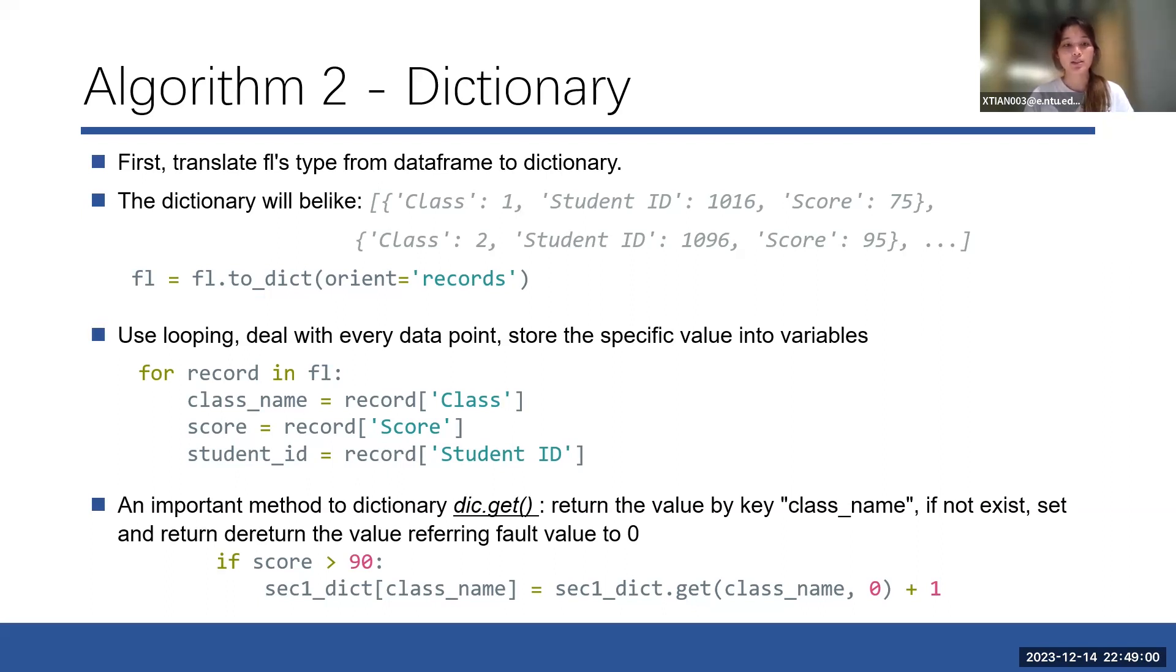Here I used a very important method called get. It has two parameters, the key and the default value. It will return the referring value of the key, and if the key is not existing, it will just get the default value.